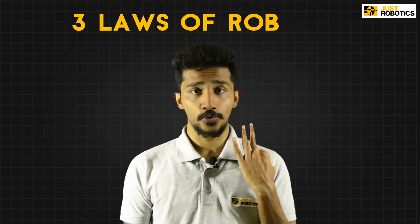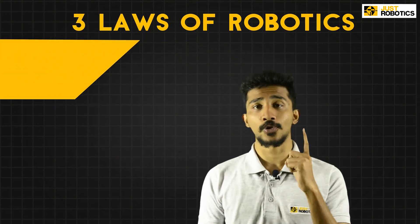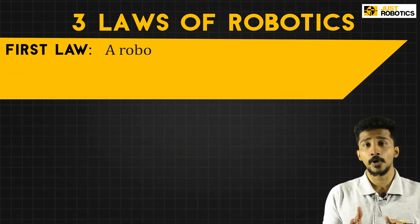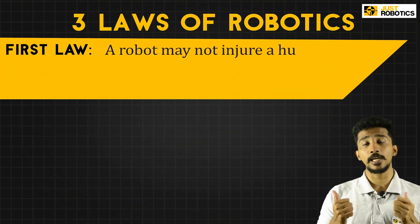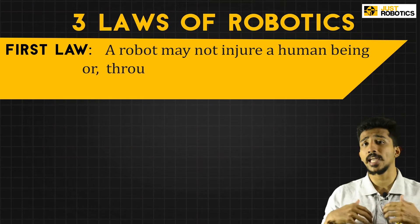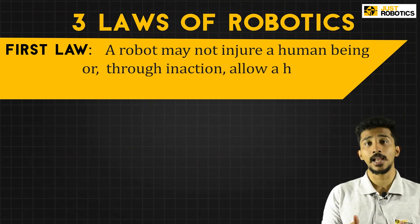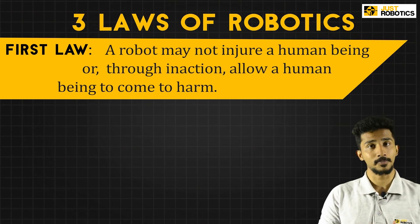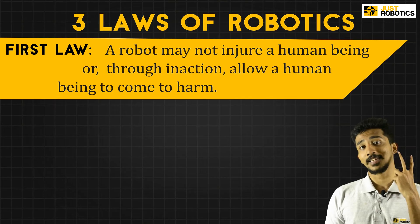The word robotics was first coined by Isaac Asimov way back in 1940, and Isaac Asimov formulated the three laws of robotics. The first law of robotics states that a robot may not injure a human being, or through inaction allow a human being to come to harm.